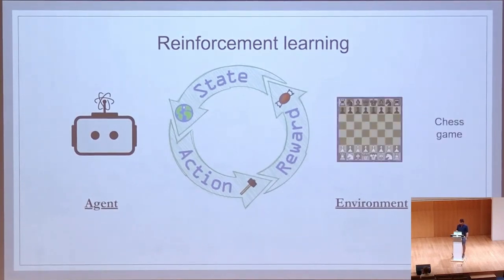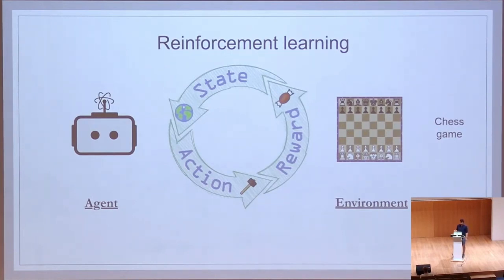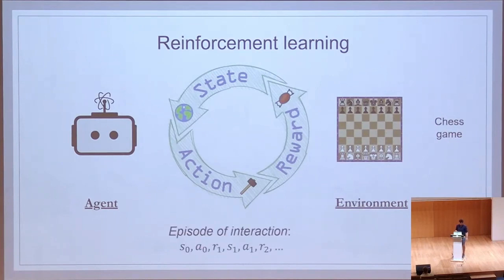An example of an environment can be a game of chess. The agent, by interacting with this game, will see a configuration of a board, move a piece through an action, and then get a reward when it wins or loses the game. It will try to learn how to play. This interaction of states, actions, and rewards is a cyclic interaction that we usually divide into episodes.